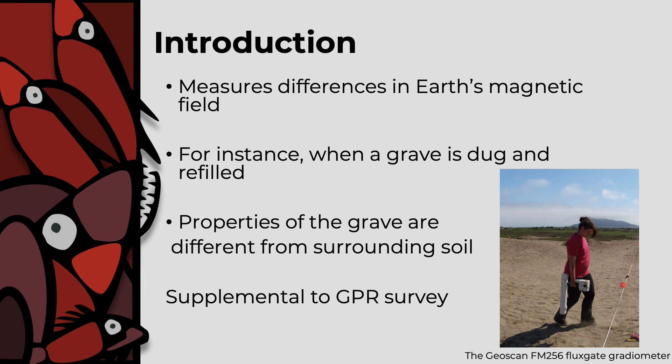This is because topsoil, the layer of Earth closest to the surface, usually has slightly higher magnetic properties than the underlying subsoil as it contains more and different forms of iron minerals. When a grave is dug and refilled, the topsoil and subsoil are often mixed together, and as a result, the soil in the grave shaft has different magnetic properties than the surrounding area.